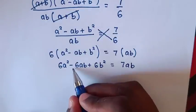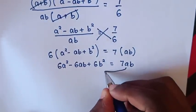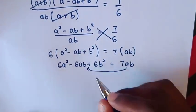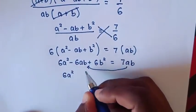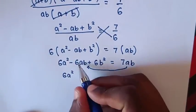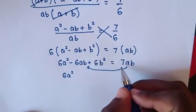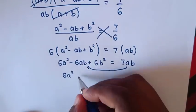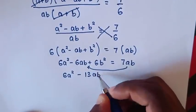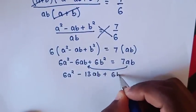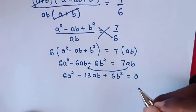We move 7ab to the left side. Combining −6ab and −7ab gives −13ab. So the equation becomes: 6a^2 − 13ab + 6b^2 = 0.